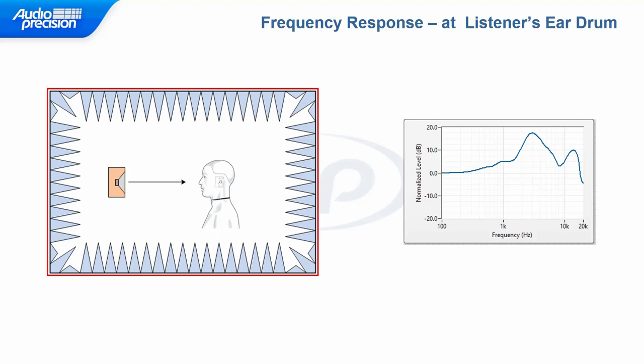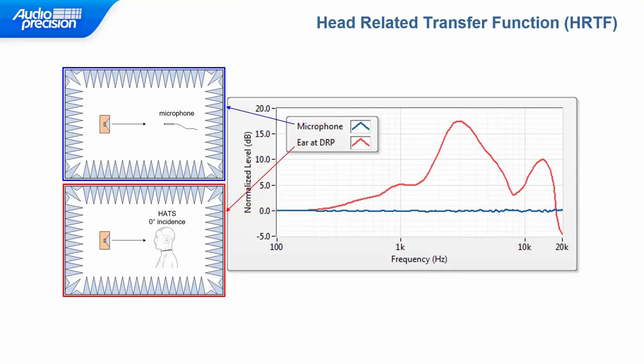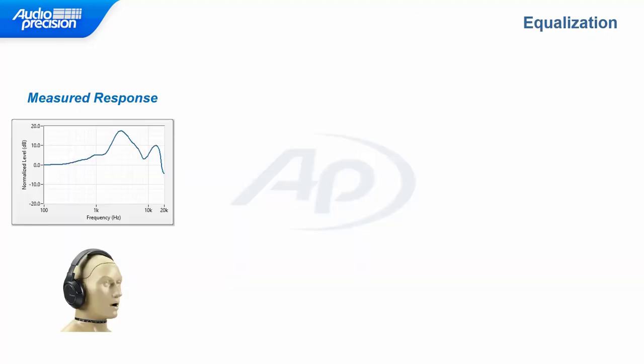There is actually a different HRTF curve for each position of the source around the person in three-dimensional space. This one is called the zero-degree, or on-axis, HRTF. The head-related transfer function includes the effects of the person's body, head, pinna, and ear canal on the acoustic signal as it travels from the source through the air to the eardrum.